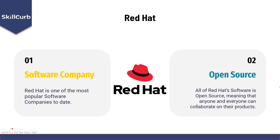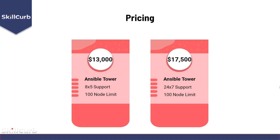Ansible is owned by a company called Red Hat, an immensely popular software company that provides open-source software to organizations. All of Red Hat's software is completely open-source, meaning anyone can collaborate on their products. Almost all of Red Hat's products are divided into two categories: the open-source version and the commercial version. This applies to Ansible as well. The open-source version is called the Ansible Engine, and the commercial version is called Ansible Tower.